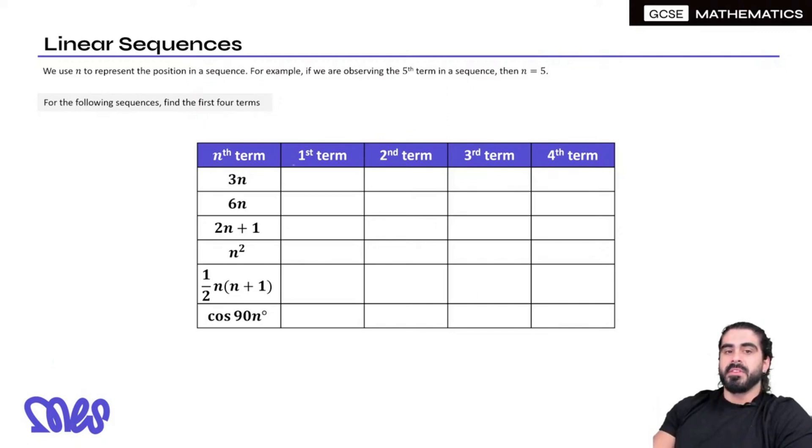So, 3N. The first term would mean N is 1, right? So you'd be substituting N equals 1 into 3N. 3N means 3 times N, so if N is 1, 3 times 1 is just 3. The second term, N is 2, so 3 times 2 is 6. The third term, N is 3, 3 times 3 is 9. The fourth term, the N value would be 4, 3 times 4 is 12.